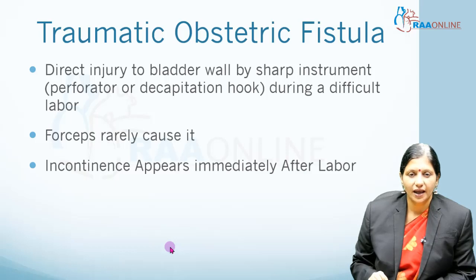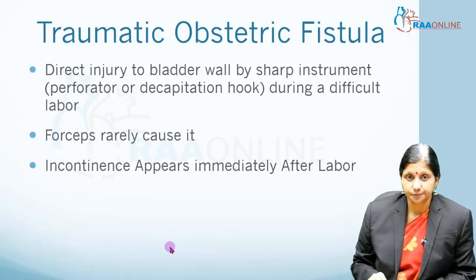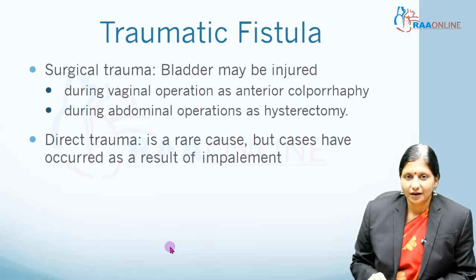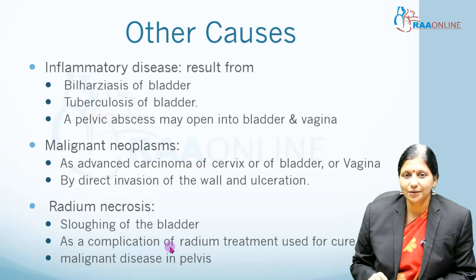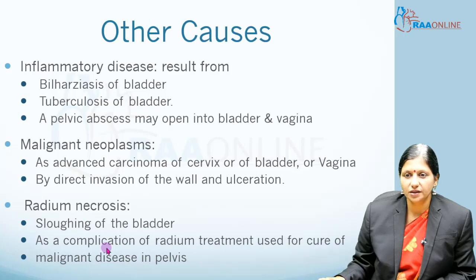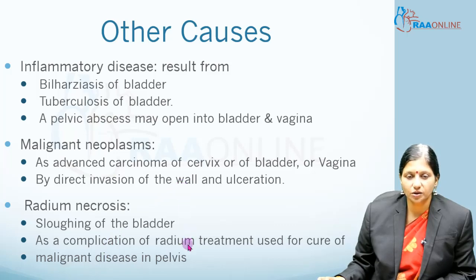Traumatic obstetrical fistulas happen due to direct injury to the bladder by sharp instruments like a perforator or decapitation hook, and very rarely by forceps; these present immediately after labor. Surgical traumatic fistulas occur during vaginal operations like anterior colporrhaphy or abdominal procedures like hysterectomy. Direct trauma to the bladder can also occur in road traffic accidents. Inflammatory diseases like bilharziasis, tuberculosis, and pelvic abscess can open between the bladder and vagina. Malignant neoplasms of the cervix, bladder, or vagina can invade and ulcerate the bladder wall, and radiation necrosis can cause sloughing leading to fistulas.